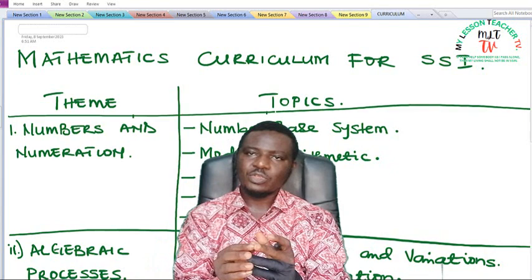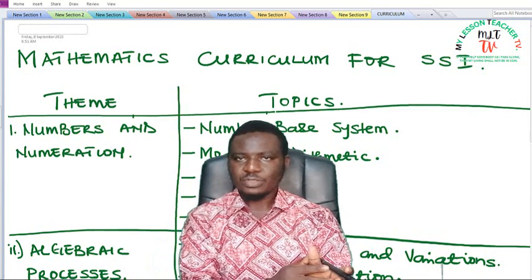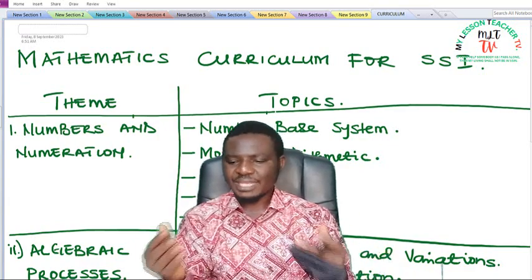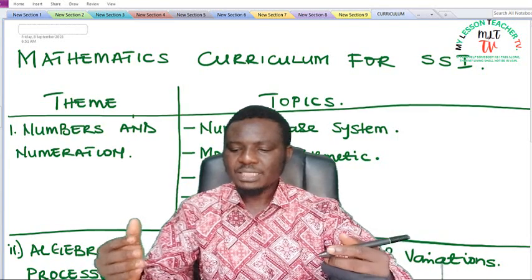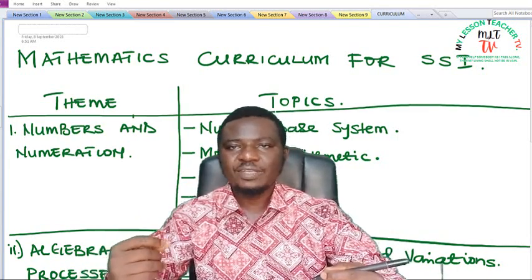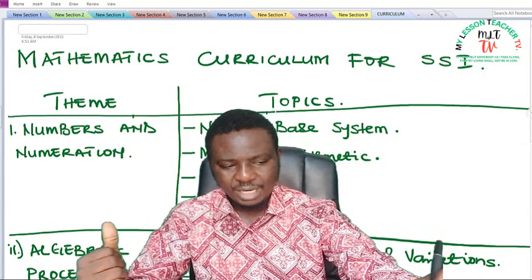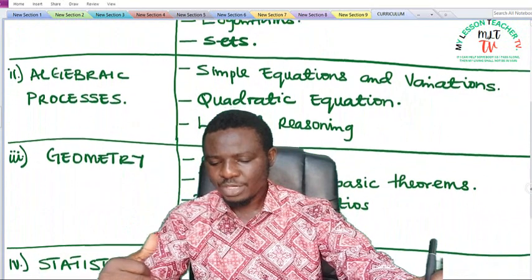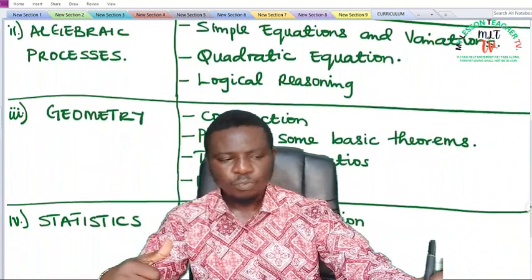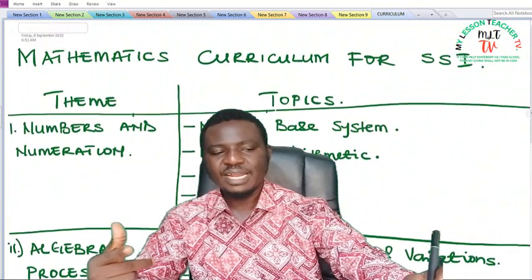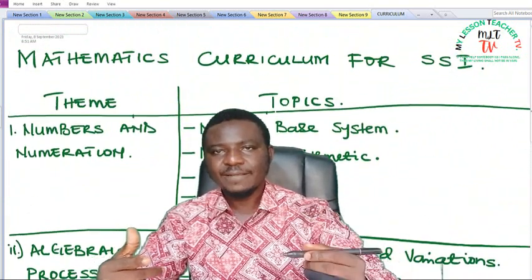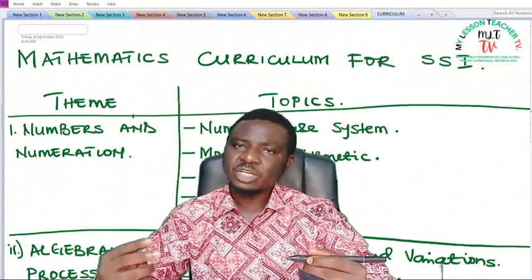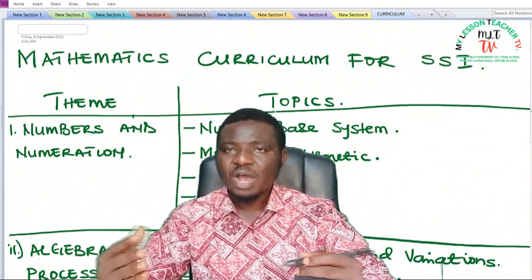In SS1 you may not see calculus, which may come in later at SS3. For SS1 we have themes like numbers and numeration, algebraic processes, geometry, and statistics. When we get to SS3 you will discover that a fifth theme — calculus — has been introduced, but for SS1 and SS2 you have only four themes.